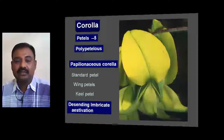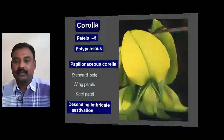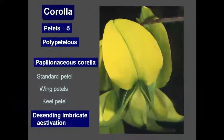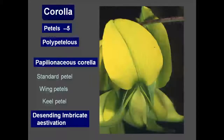Next to the standard petal, two petals are present — they are called the wing petals. Below the wing petals, another two petals are present — they are called the keel petals. The corolla of Fabaceae is arranged in a descending imbricate aestivation.